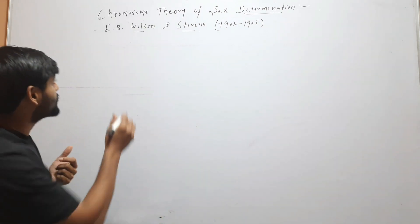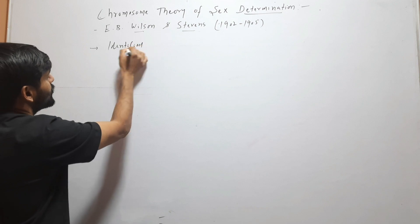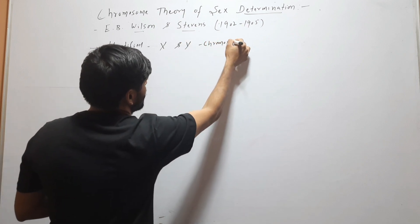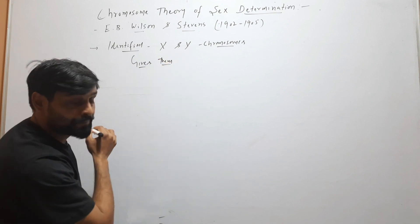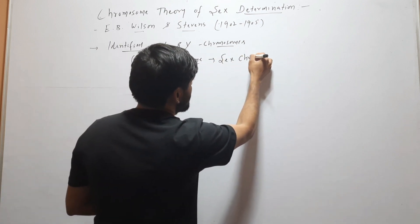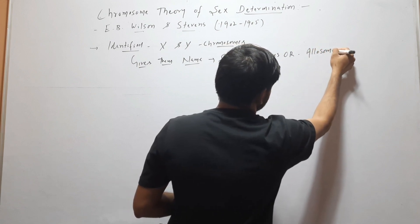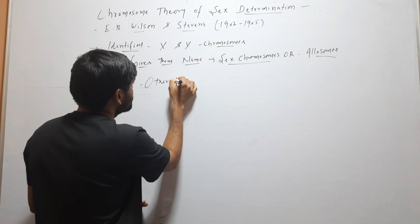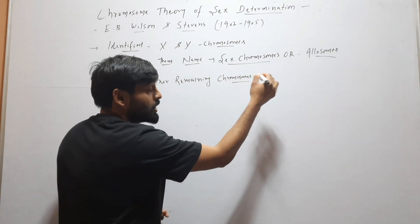What are the postulates of this theory? These two biologists, E.B. Wilson and Stevens, identified X and Y chromosomes and gave them the name sex chromosomes, or allosomes. Other remaining chromosomes were called autosomes.